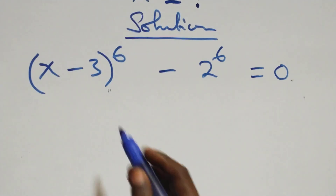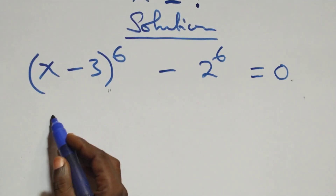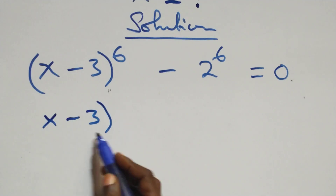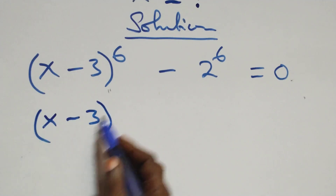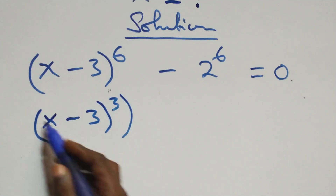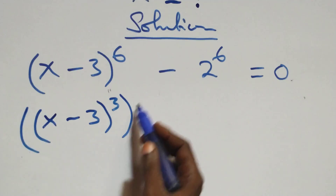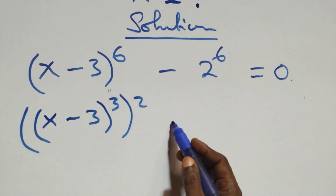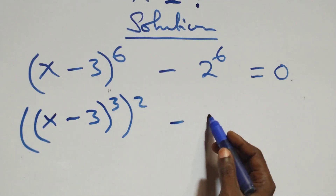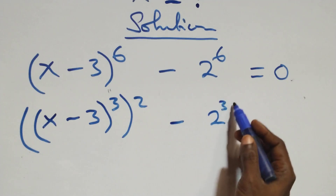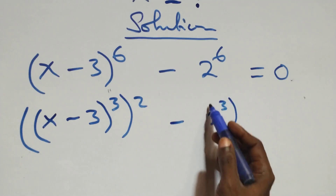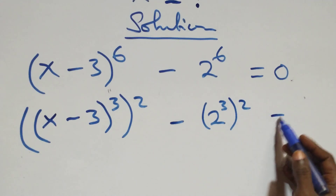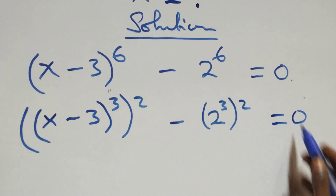Then next step, we can write this as x minus 3, 4 raised to power 3, then all raised to power 2, as 2 times 3 gives us 6, then minus 2 raised to power 3, 4 raised to power 2, also then equals to 0 here.